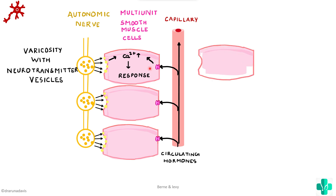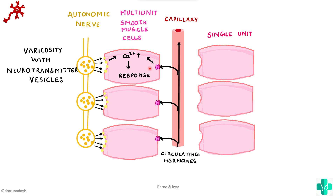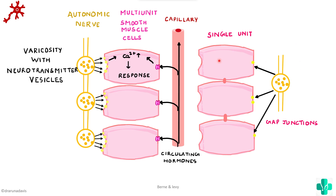What about single-unit or syncytial type smooth muscles? The difference between multi-unit and single-unit is that in single-unit, you just need a single stimulus — that will spread through different cells via gap junctions. There might be just one varicosity releasing neurotransmitter and that would be enough because there is communication between cells. Similarly, single-unit cells can also be stimulated by circulating hormones. Whatever the stimulus, it will ultimately increase the amount of calcium and cause a response, and in single-unit that response spreads through gap junctions.